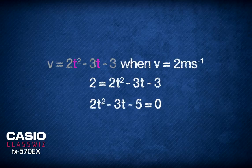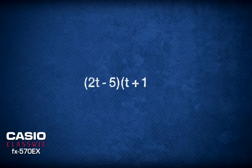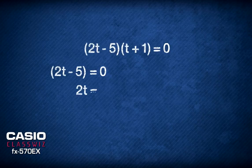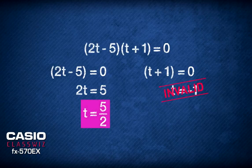Simplifying and factorizing the quadratic function, we have 2t minus 5 times t plus 1 equals 0. We can then solve t equals to 5 over 2 or t equals to negative 1. Since negative values of time are invalid, we find that when the object is traveling at 2 meters per second, t equals to 5 over 2 seconds.